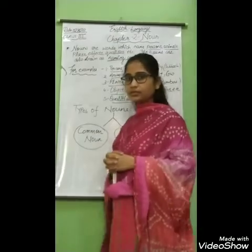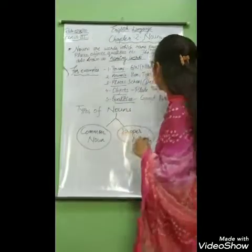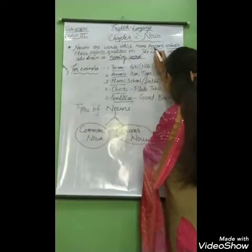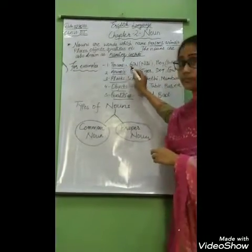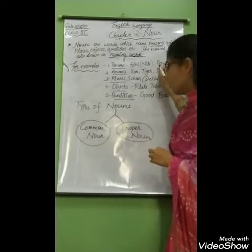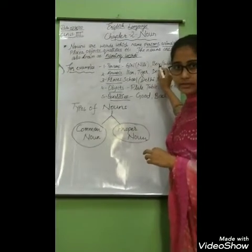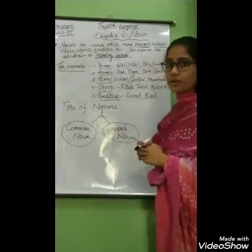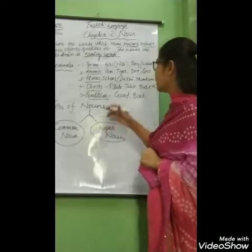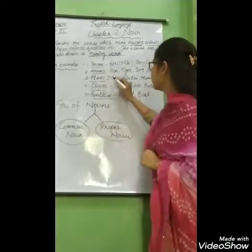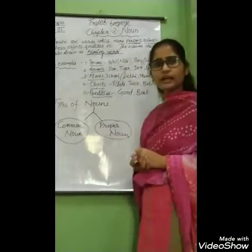For example, person. Nouns are words which name persons. A person may be a girl or a boy, uncle or aunt — it will come under persons. Now animals: lion, tiger, dog, cow — so many animals are there.